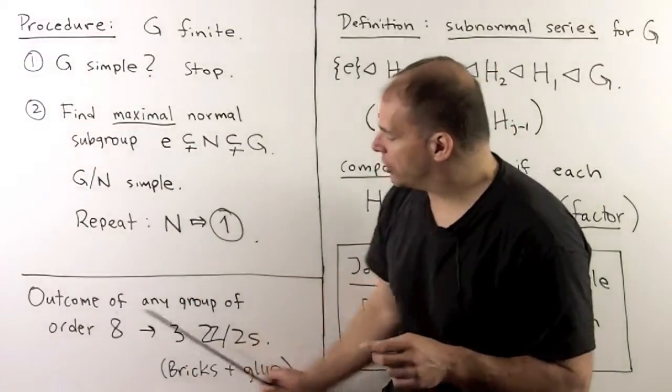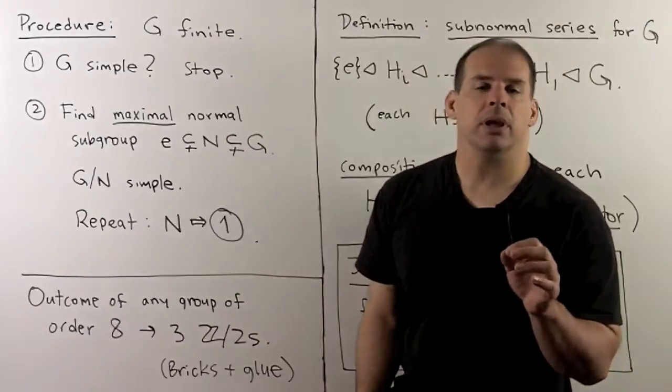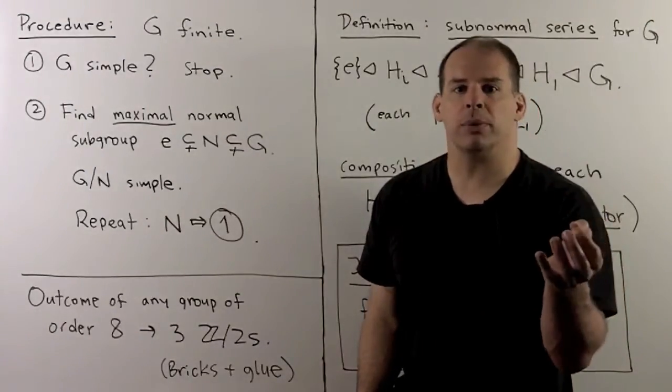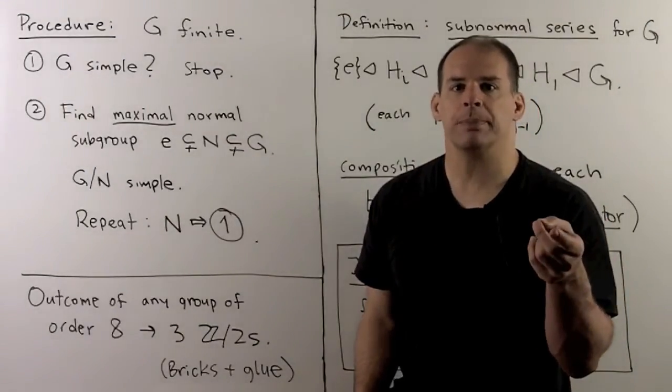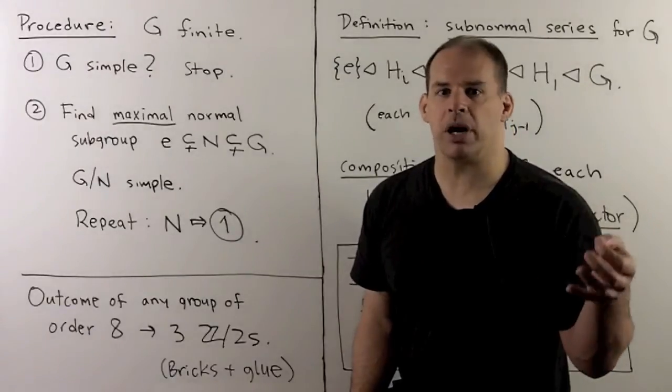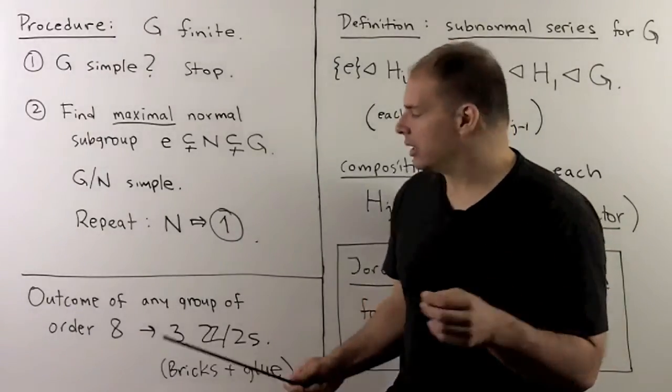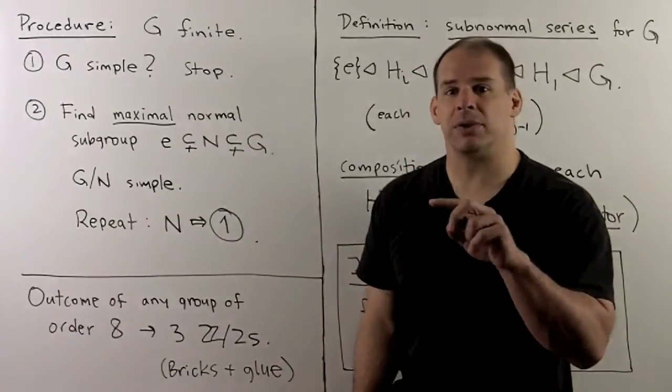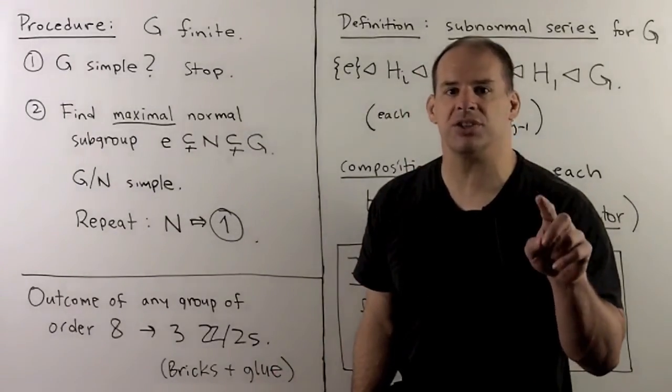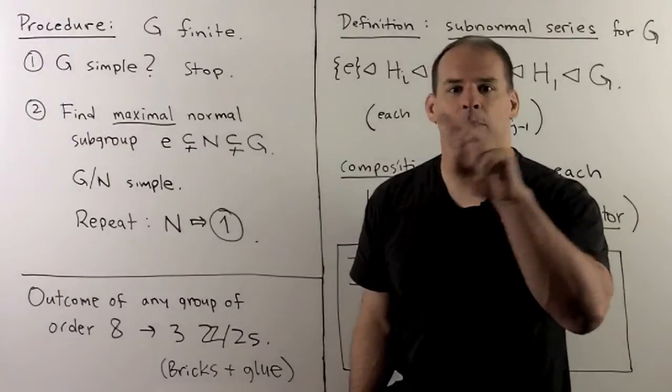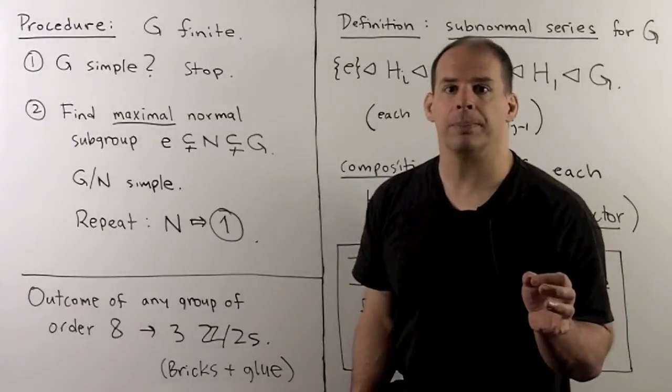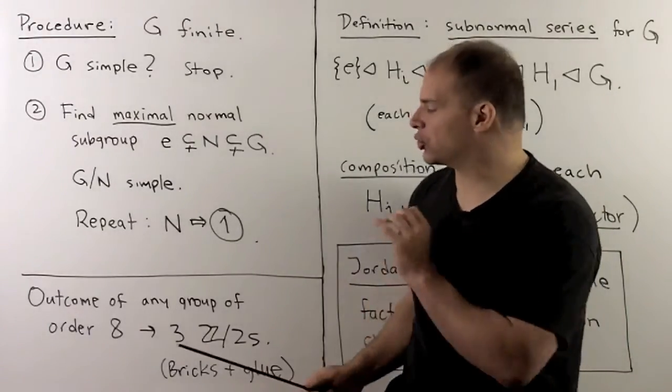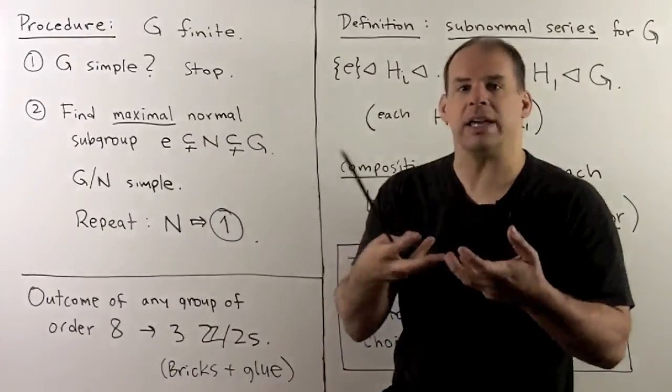Now, the way we should think of what we're doing here. Well, we're reducing our group to a list of simple groups. So, I think of the simple groups as the bricks. What makes, say, a quaternion group different from D8, different from Z2 cross Z2 cross Z2, is how these simple groups are all glued together. So what we're doing here is just stripping out all the glue and looking at the bricks.